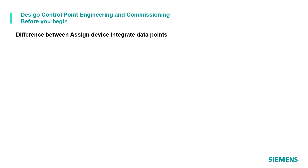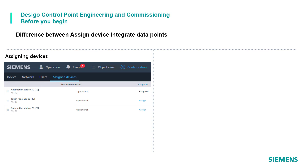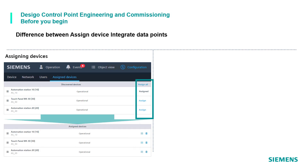What is the difference between assigning devices and integrating data points? When we talk about assigning devices, we refer to which devices in the physical BACnet network should be linked to a specific DCGO control point device for general access and generic operations.